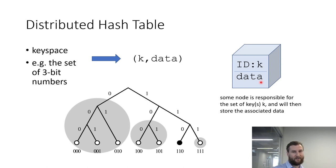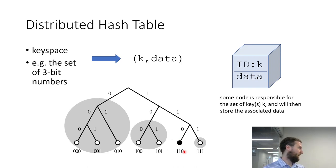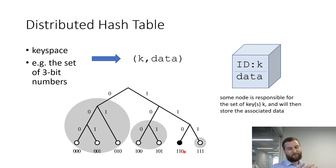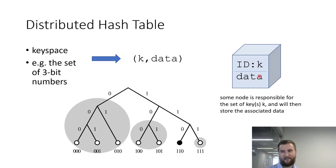In a traditional hash table the buckets are fixed — if my node goes offline, that data is inaccessible, like a library system where a book might not be at your branch. In a distributed system the solution is overlap: sophisticated techniques determine the overlap necessary so data remains available. Other nodes also store the data, but not everyone. Compare this to the blockchain where every single node has to have all the data — the hash table is a different structure.